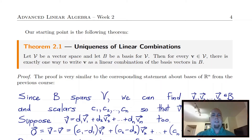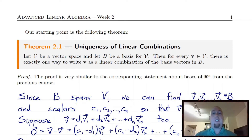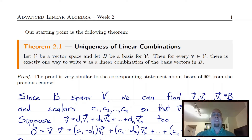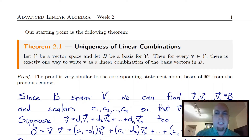Hey folks, my name is Nathan Johnson and welcome to lecture 6 of Advanced Linear Algebra, which is all about coordinate vectors. This is where we start to actually see why bases are useful. Remember last lecture we went over bases, which are just sets of vectors that both span the vector space in question and are also linearly independent. And now we're going to look at why we like sets of vectors that have those two properties — what actually makes them useful. Our starting point, really the impetus for this entire lecture, is this first theorem here that we're going to go through.